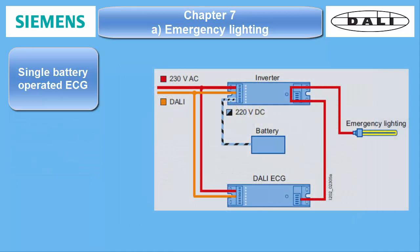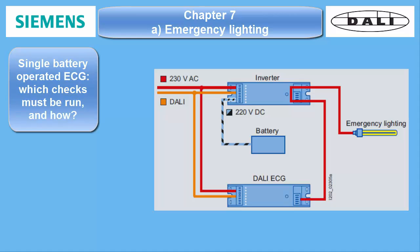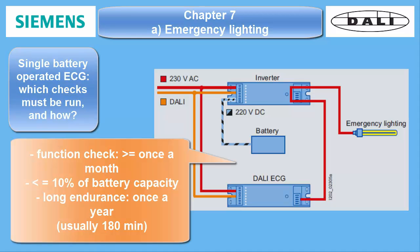With single battery operated ECG. According to EN 62034, there are function checks and endurance checks which not only have to be carried out, but also recorded very precisely. A function check must be carried out at least once a month and must not last longer than 10% of the battery capacity. The endurance check must be run at least once a year and must prove that the battery is still good to operate the luminaire for at least 180 minutes.